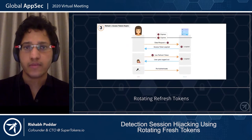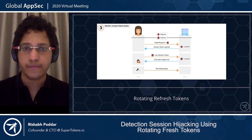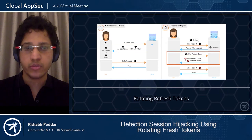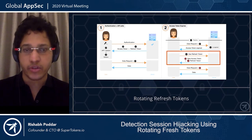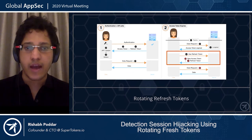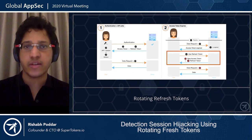At some point, both the access token and the refresh token will expire, after which the user has to log in again. The crucial part of this flow is that when we use the refresh token, we get back a new access token and a new refresh token — this is why we call them rotating refresh tokens. They are essentially one-time use only, and this creates a dynamic that allows us to detect session theft.